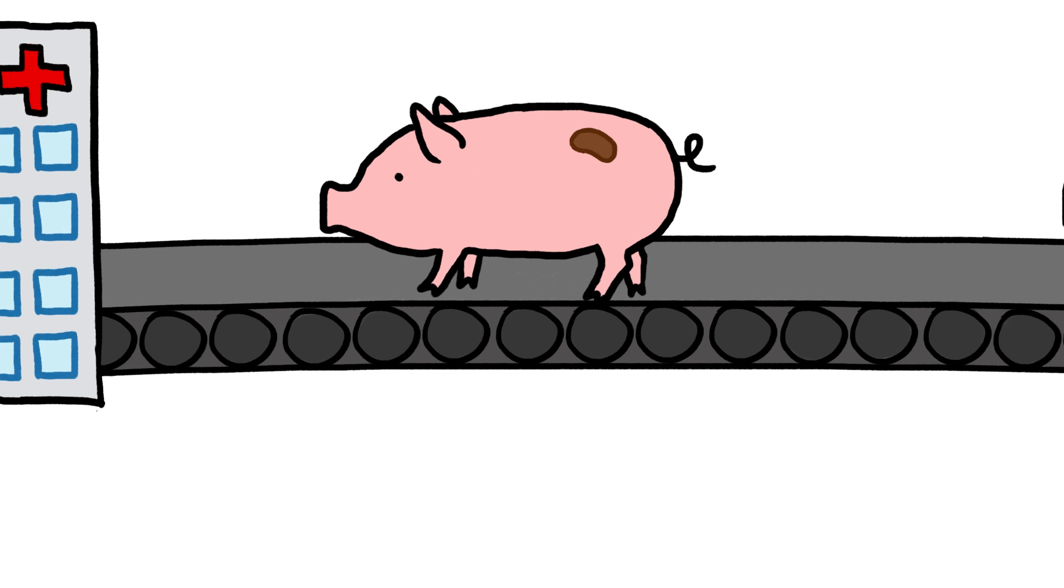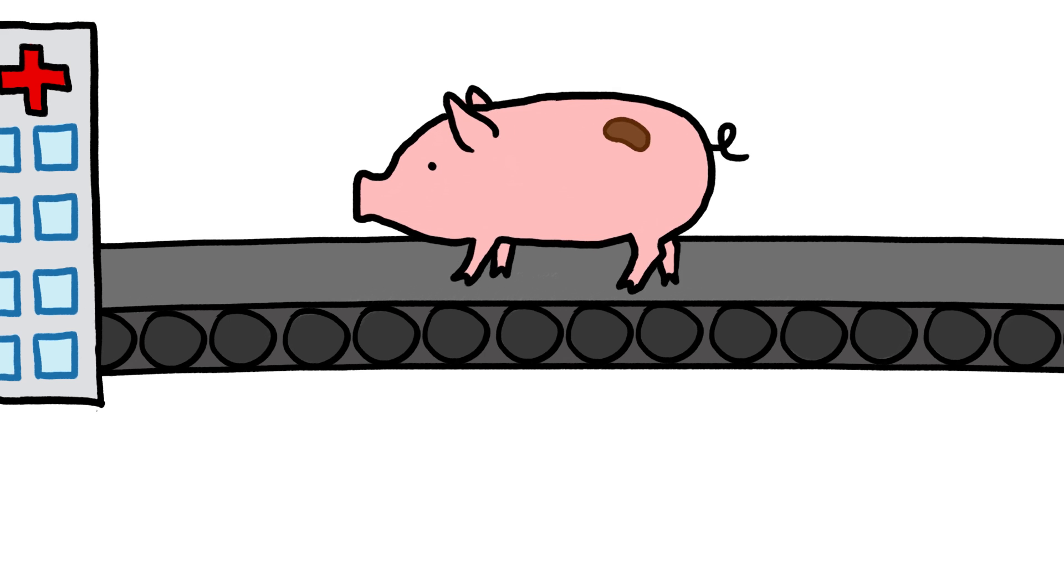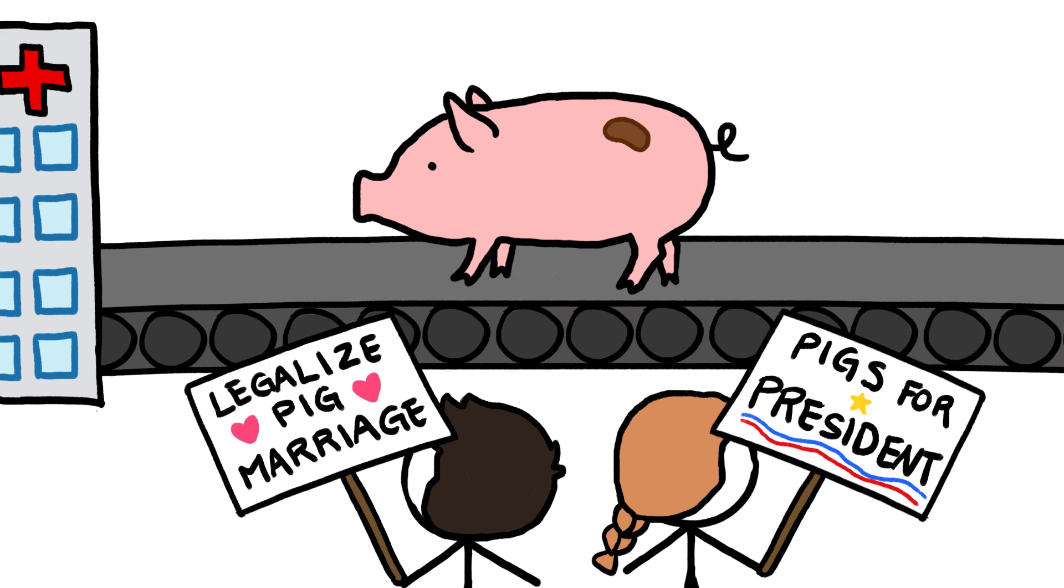Even if the cells don't migrate, and these hybrid pigs end up producing lots of life-saving organs, what rights do we give to a part-human pig, even if the part is just a kidney? What if it's two kidneys? Two kidneys, a liver, and a set of lungs?